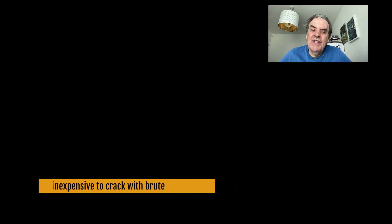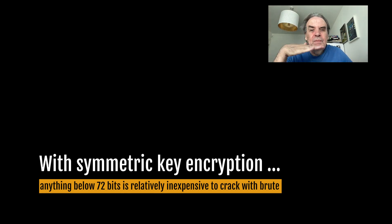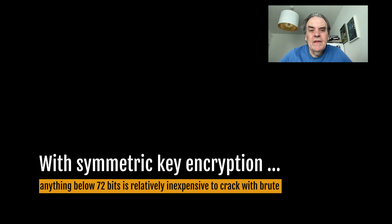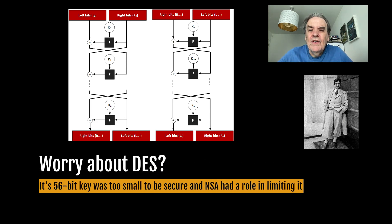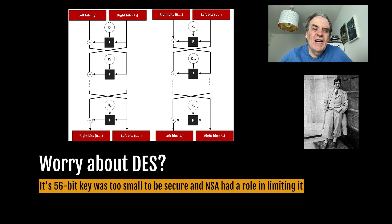With symmetric encryption, anything below 72 bits is relatively inexpensive to crack with brute force. One of the first symmetric key methods was the Lucifer cipher, created by Horst Feistel at IBM. It was further developed into the DES encryption method, which we now know as 3DES. Many at the time of the adoption of DES felt that its 56-bit encryption key was too small to be secure and that the NSA had a role in limiting this size.